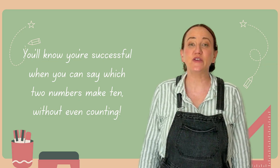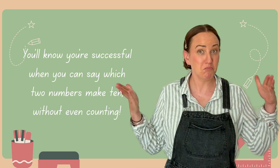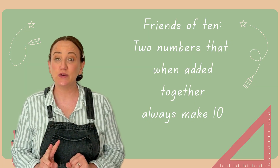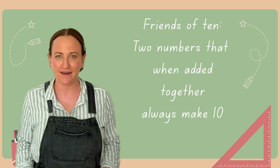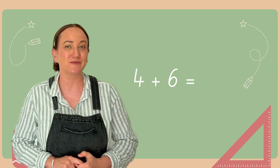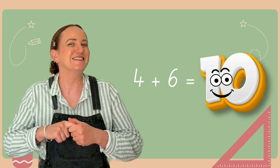Today we're learning about Friends of Ten. You'll know you're successful when you can say which two numbers make ten without even counting. Friends of Ten are two numbers that when added together always make ten. For example, one and nine are best friends because they make ten. Four and six are besties because when added together they make ten.